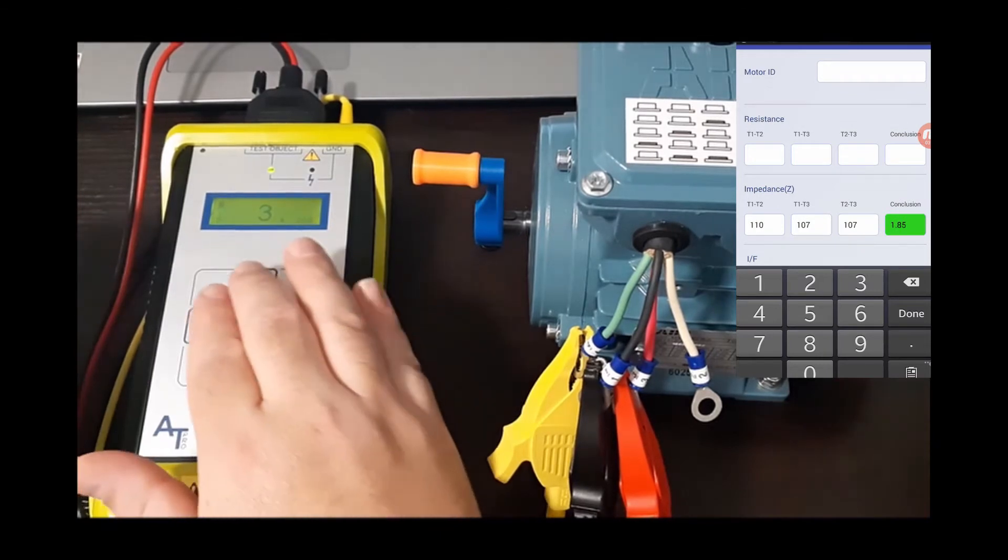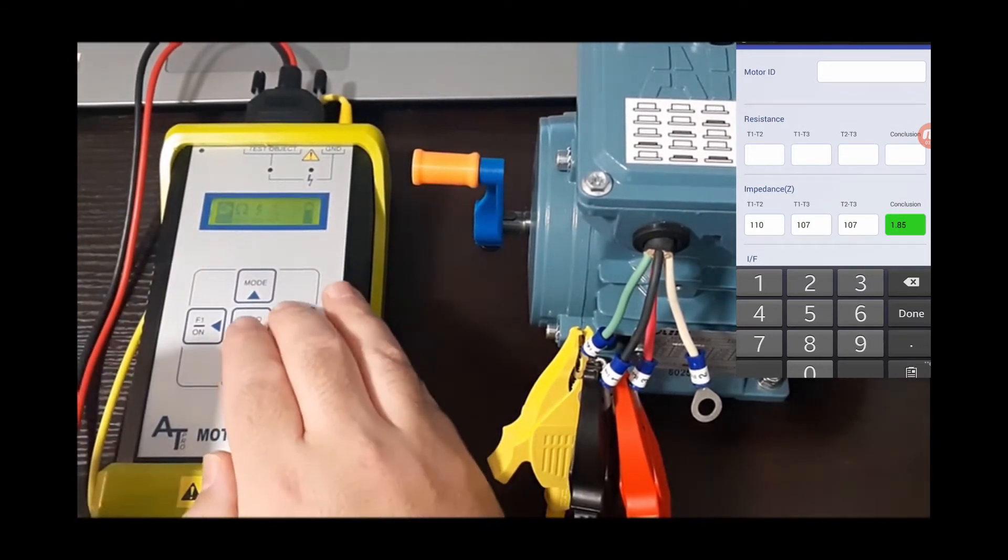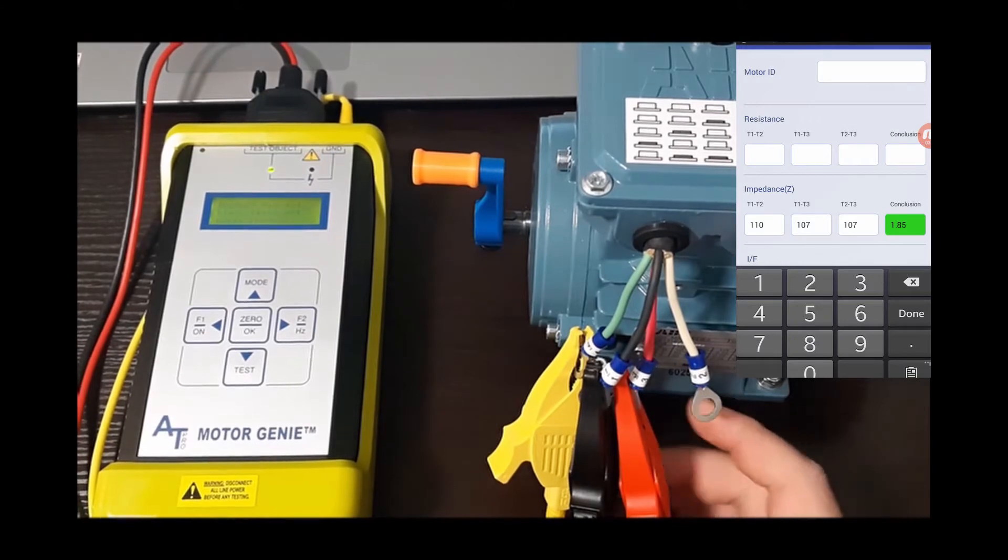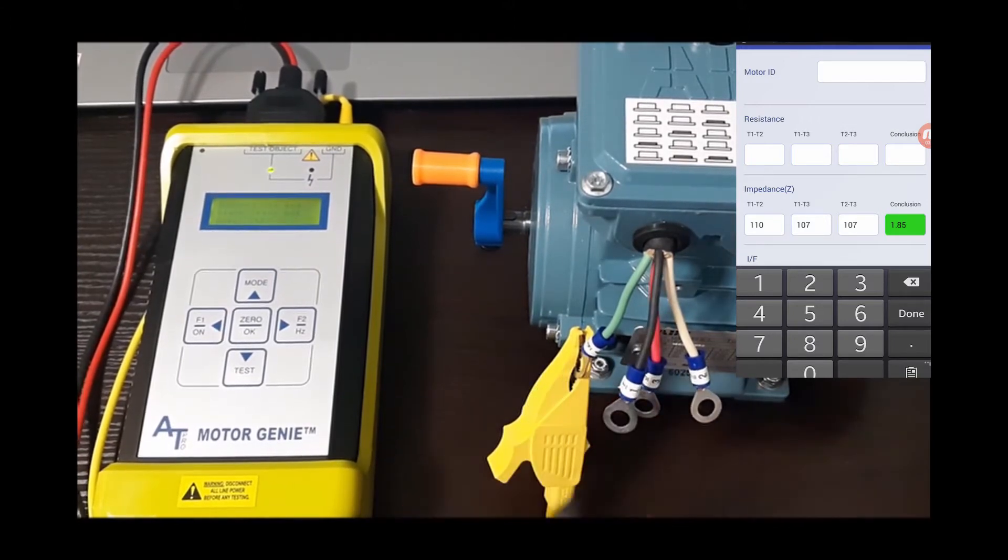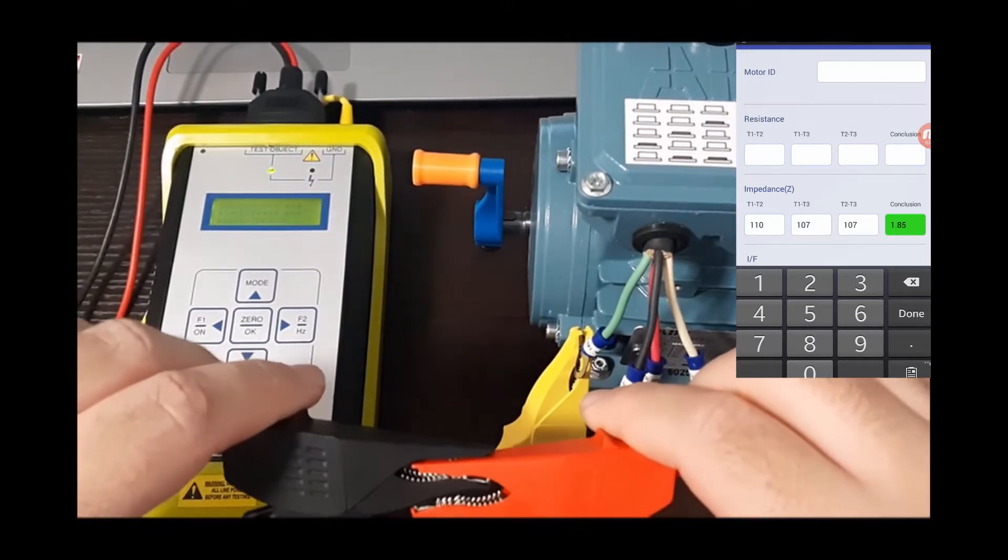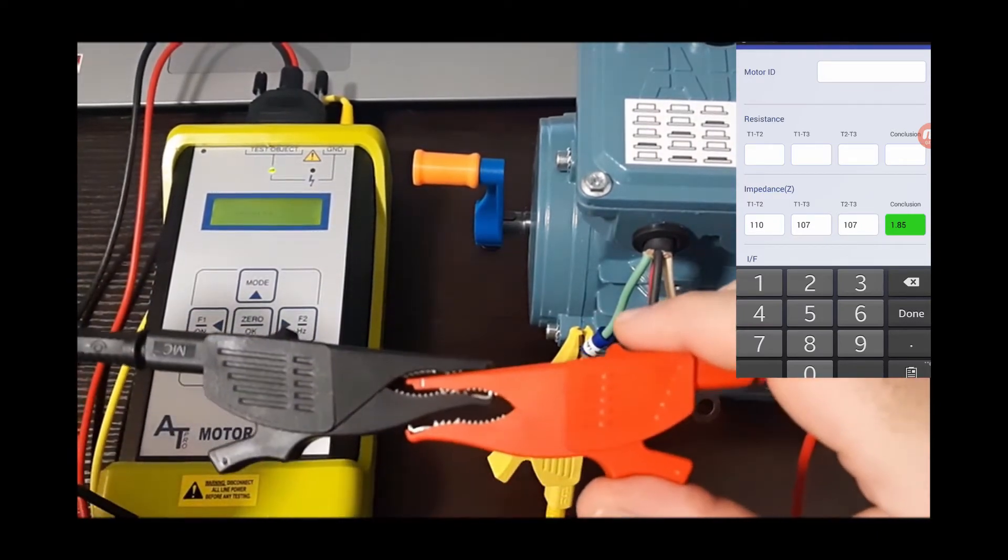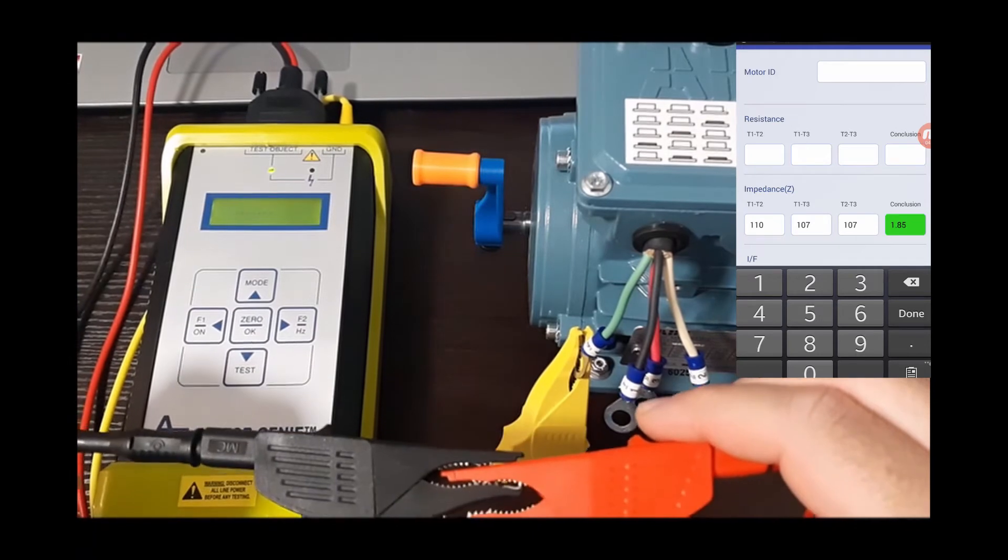Let's go to resistance. Connect red and black leads and press 0. So we actually have to connect them together like this so we get a zero reading.